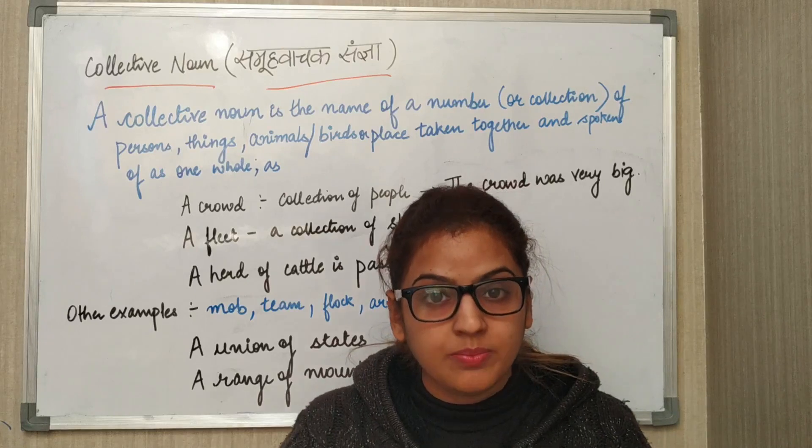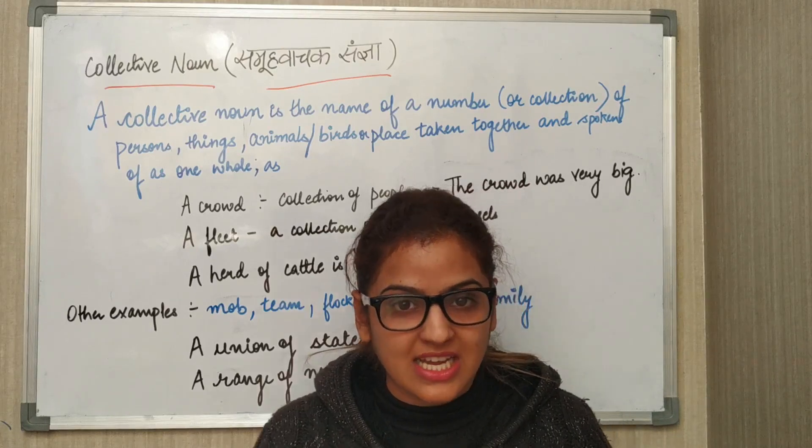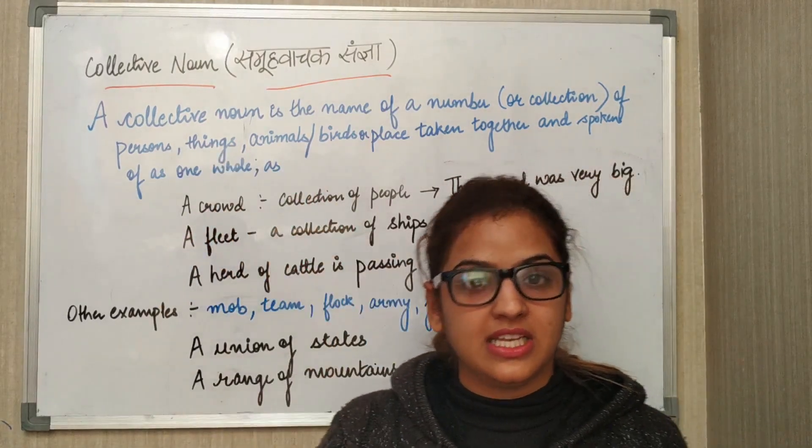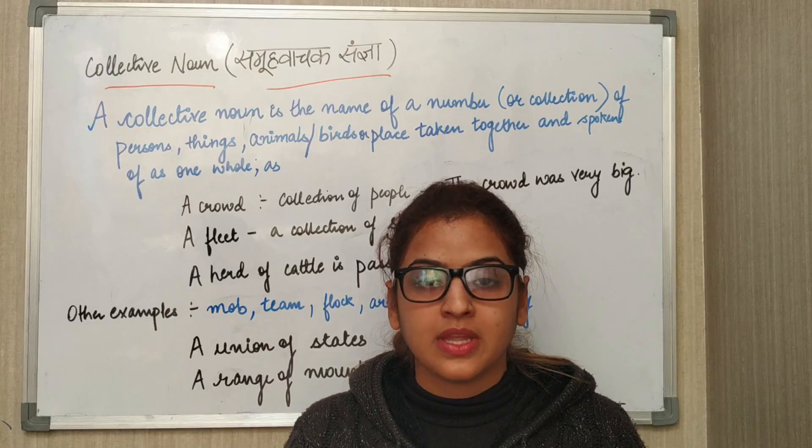In the Noun, we have six kinds. We have one kind which we call collective noun.